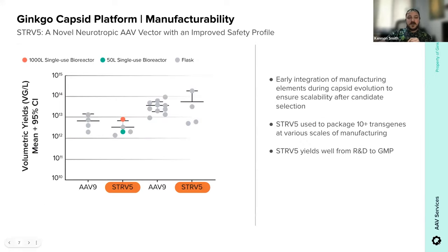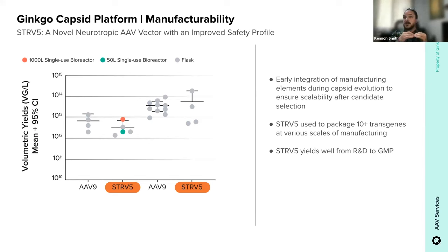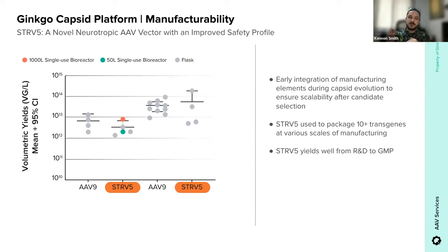The last bit for Strive-5 is manufacturability — obviously a concern with all AAVs and gene therapy products. One key thing to highlight is that during the library creation and early screening process, manufacturability is integrated very early into the pipeline to try and ensure scalability after candidate selection. After rounds of selection we go through repeat testing of manufacturability. This capsid specifically has been manufactured with over 10 transgenes, produced at various scales, and we're able to produce high purity vector from R&D to GMP. Today this capsid has been produced at scales well over the floor for a new AAV capsid: 1×10¹³ vg per liter.